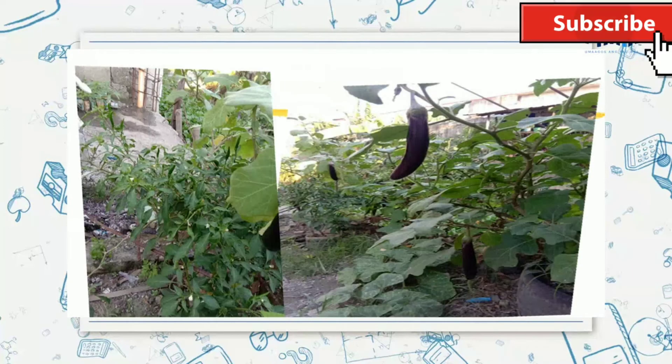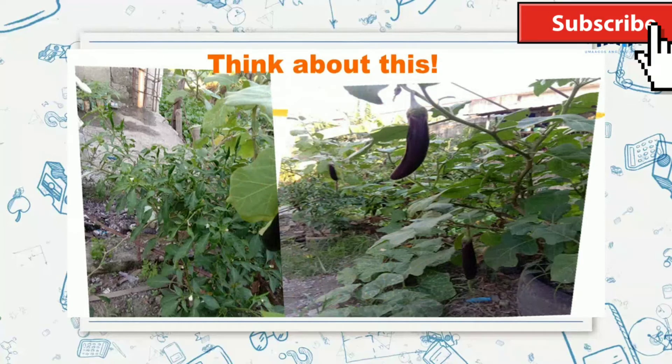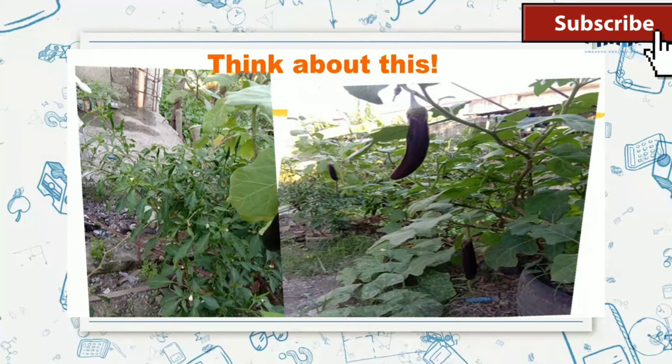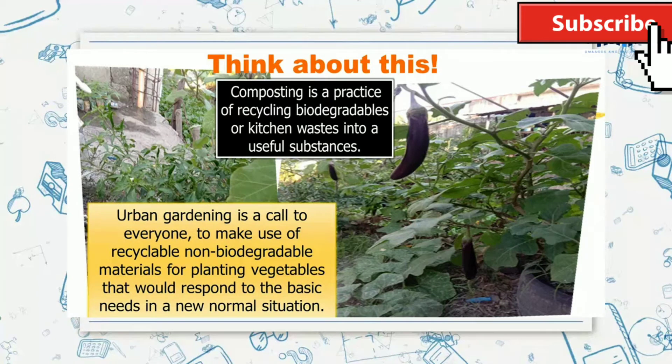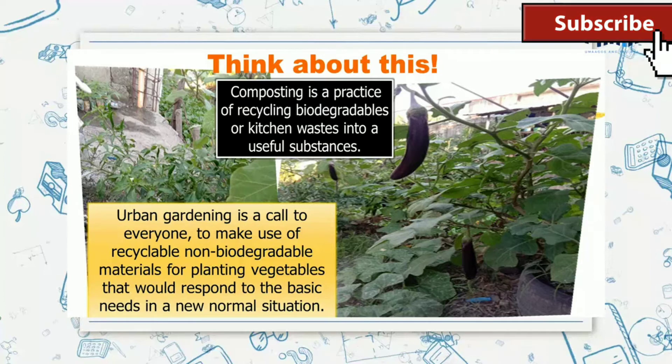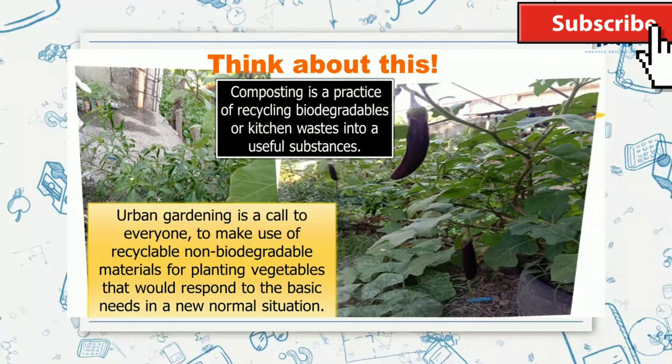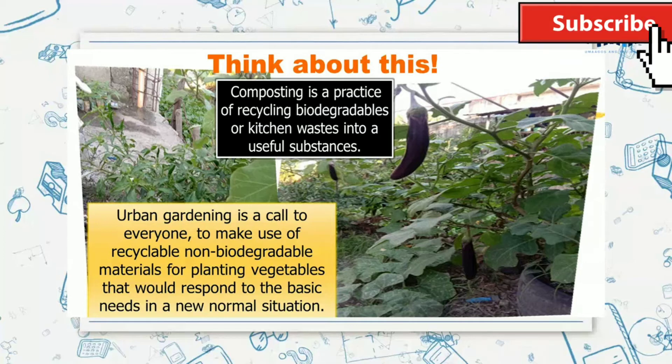All right, class, come to think about this. Two of the many projects known in Pasig City is composting and urban gardening. Aside from fertilizer, another useful product of composting is an organic pesticide. In your activity number two, it is known as compost liquid substance, or CLS, that is used as the solute in preparing organic pesticide solution, which is very significant in urban gardening.